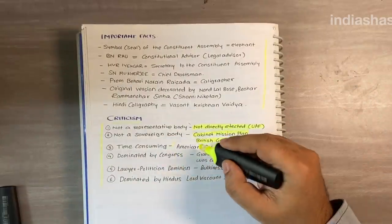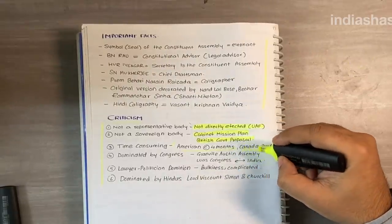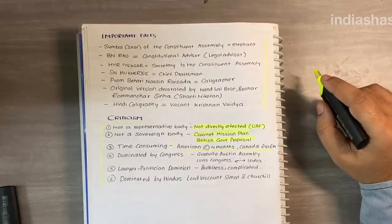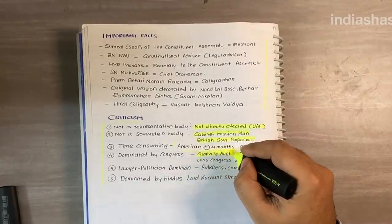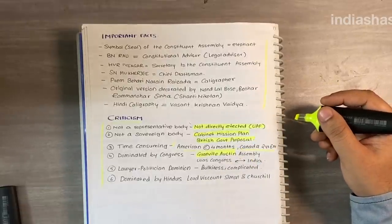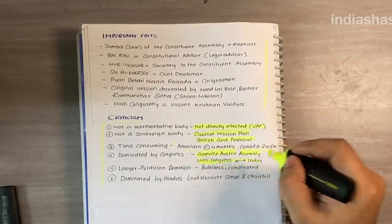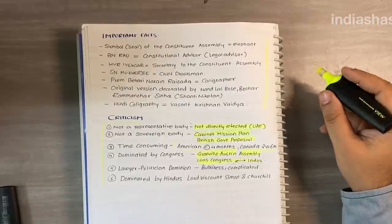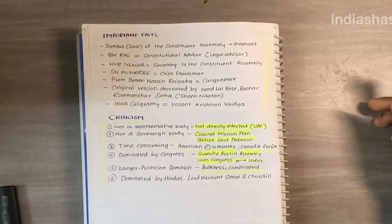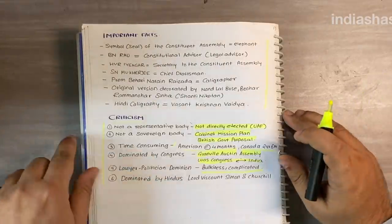There is also criticism that the constituent assembly was dominated by Congress. Granville Austin, the American constitutional expert, remarked that the constituent assembly was a one-party body in an essentially one-party country — that the assembly was the Congress and the Congress was India. There is also criticism that there was lawyer-politician domination, and other sections of society like businessmen and teachers were not duly represented, which is cited as the main reason for the bulkiness and complicated language of the constitution of India.